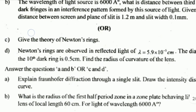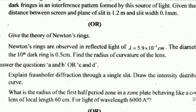Last main question — answer A and B or C and D. A) Explain Fraunhofer diffraction through a single slit and draw the intensity distribution curve. (8 marks) B) What is the radius of the first half-period zone in a zone plate behaving like a convex lens of focal length 60 cm, for light of wavelength 6000 Ångström?